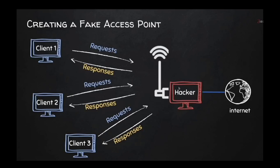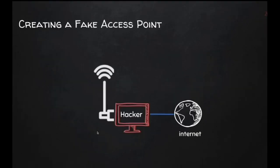This attack is very dangerous and can lead to many breaches of confidential information. Now I'm going to show you how the hacker does this. A computer is used to create a fake access point, serving as the middleman between you and the internet. When you send a request to visit www.google.com, the hacker sees that request, forwards it to the internet, receives the response, and sends it back to your computer. The hacker can also modify that response and send their own version back to you.